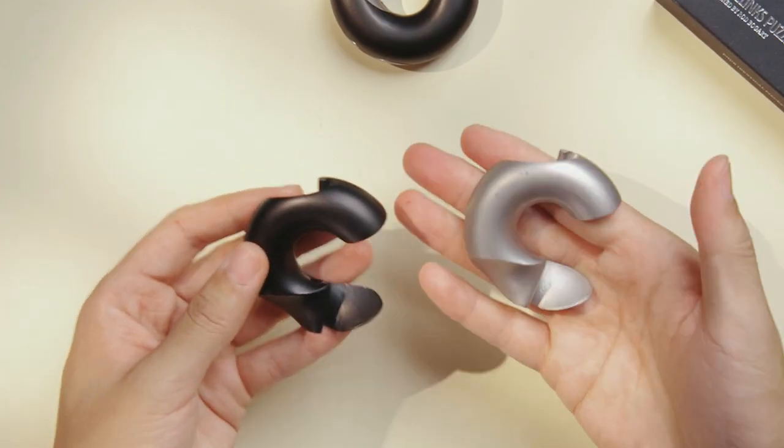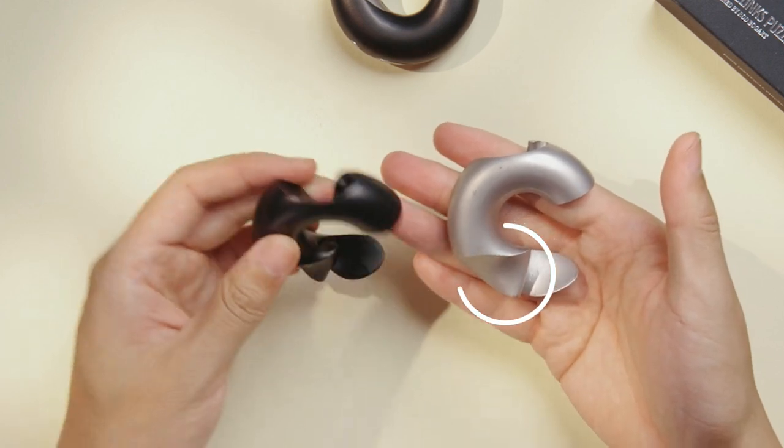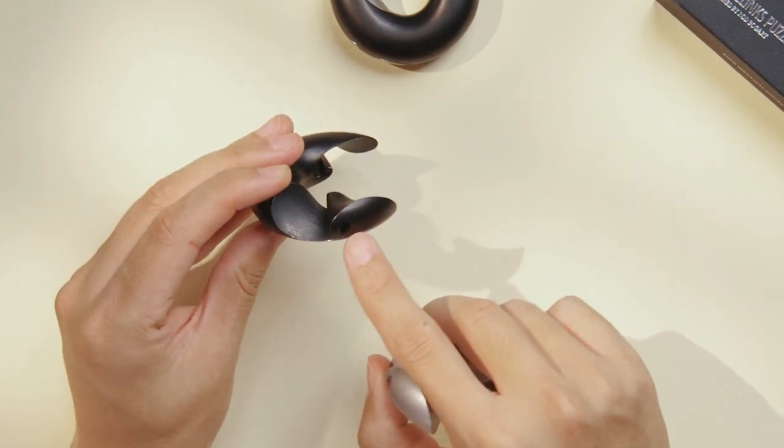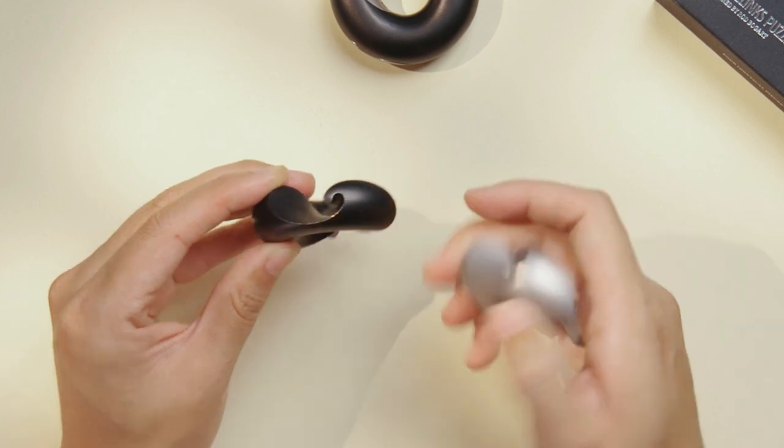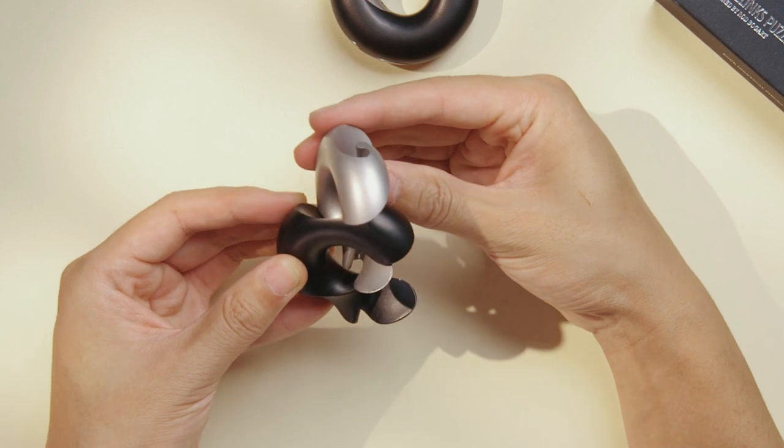The best way to think about it is to have the two C's face the same direction, and you're going to slot this stem here into the hole right here. So if we slot it in and rotate at the same time, it should go in.